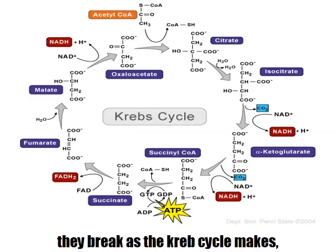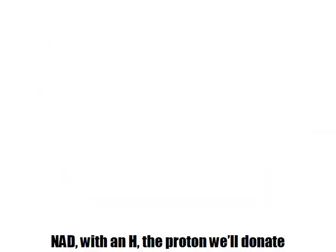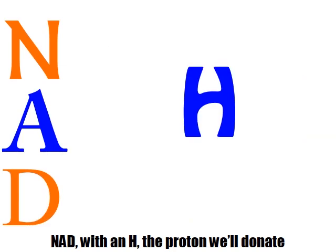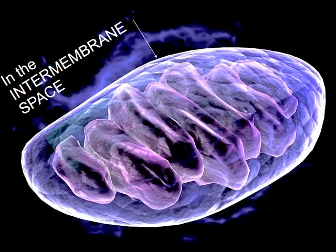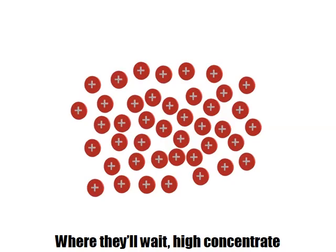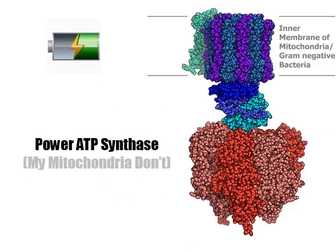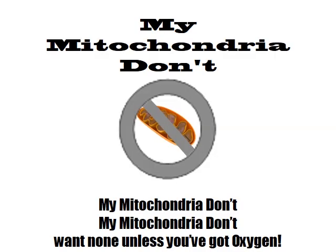By the way, these pairs of weights, they break at the curved cycle maze. NAD with an H — the protons will donate. We'll put them there in the place, in the intermembrane space. Will it wait? High concentrate? Power ATP synthase.